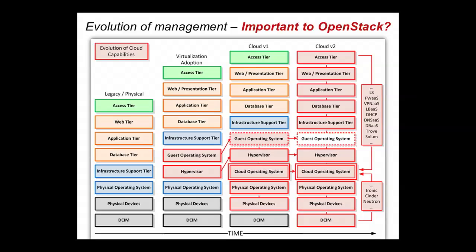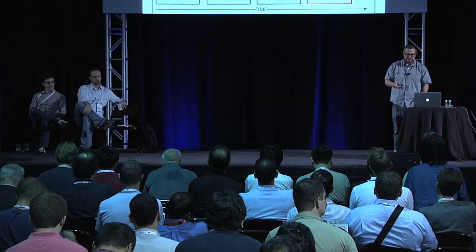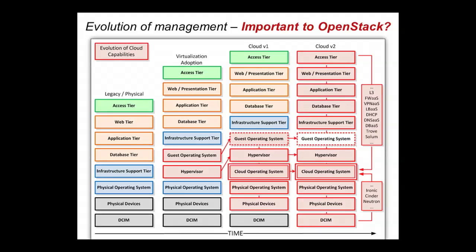On the far left you have the traditional physical model — physical operating system, infrastructure support tier apps, database, application tier, web tier, and access tier. With virtualization adoption, what got slid into that stack was a hypervisor and a guest operating system, so now there are two more components you have to monitor and manage. What I'm calling cloud v1 is kind of where we're at today, where we've added a cloud operating system that has a closer tie to the physical operating system and physical devices. That area in red becomes what we have to be responsible for, because the line is blurred between what our cloud operating system is and what it's actually doing to the hardware.